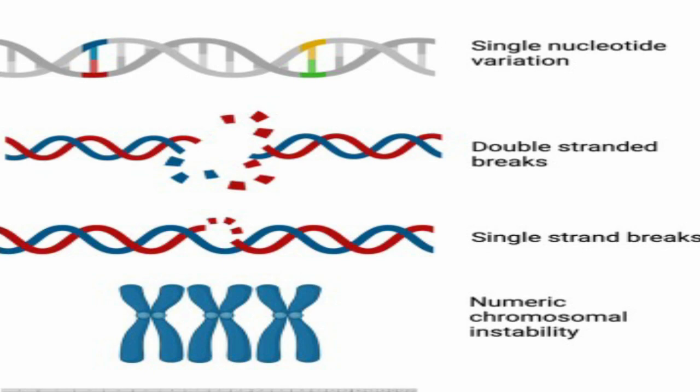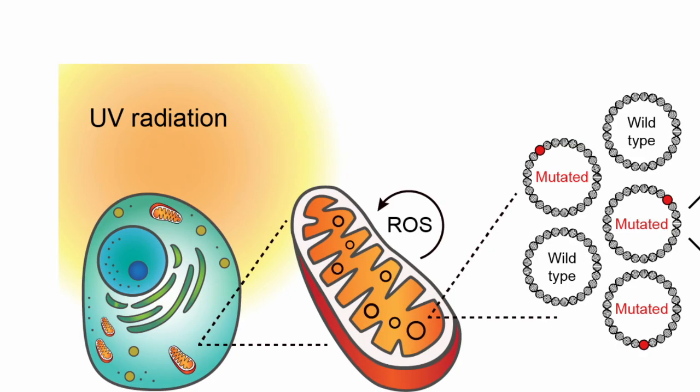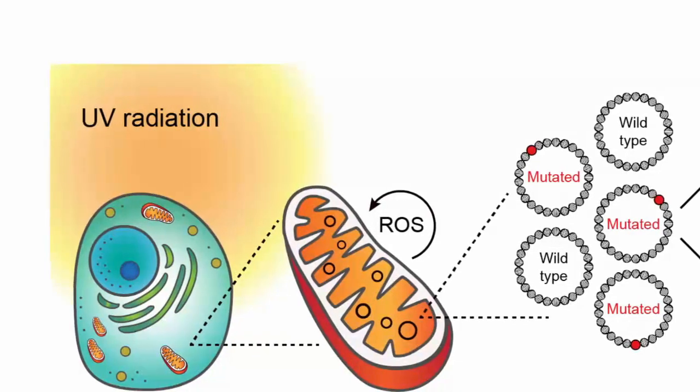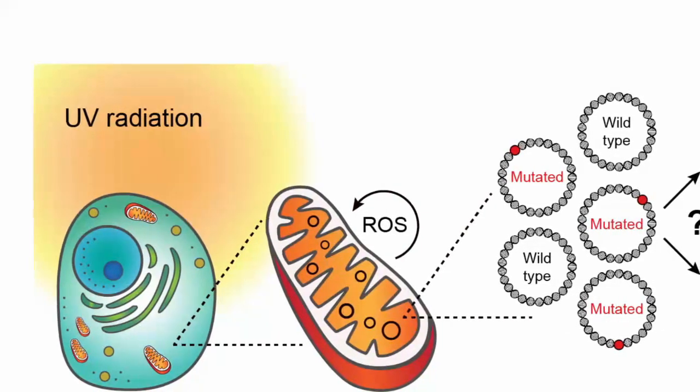Genomic instability refers to the tendency of an organism's genetic material, particularly DNA, to change. When genomic instability occurs, it can lead to various genetic changes including mutations, chromosomal rearrangements, and other alterations that may have implications for an individual's health. There are a number of reasons why genomic instability can occur.